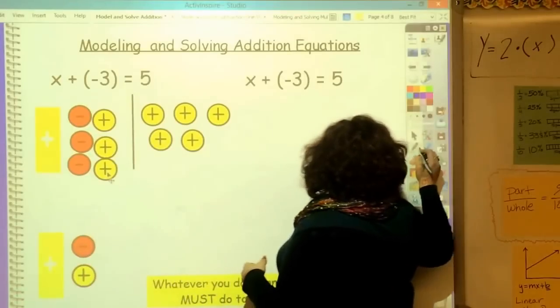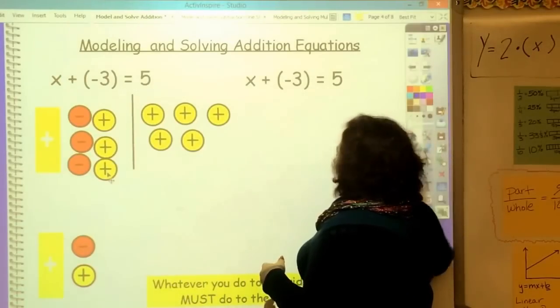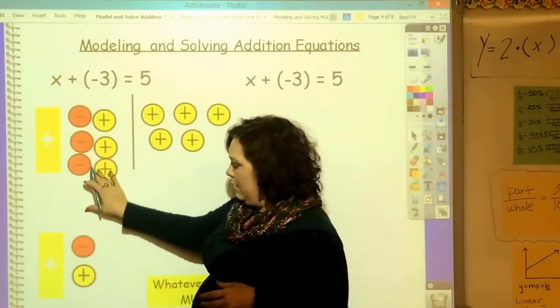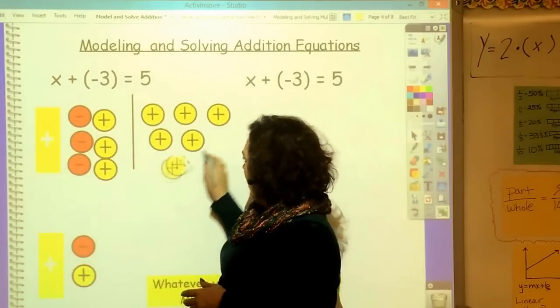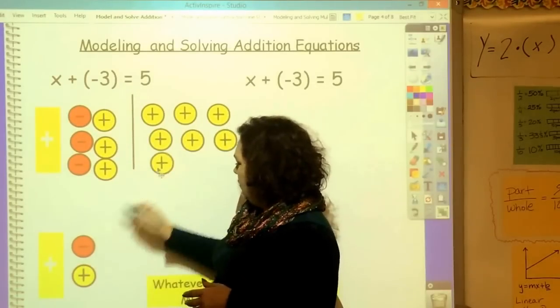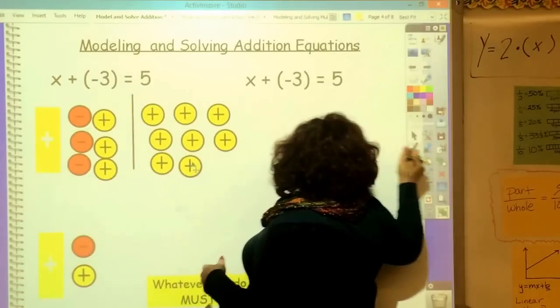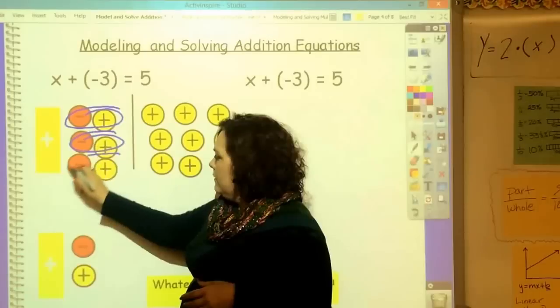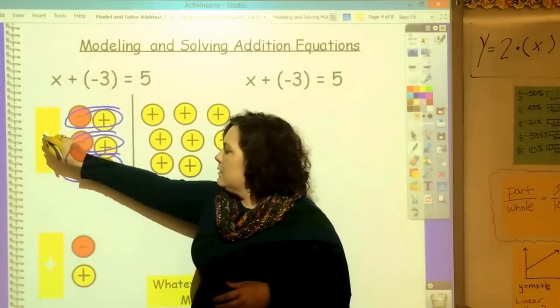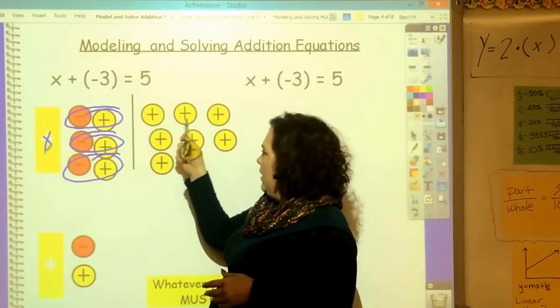What I do to this side, I have to do to this side. I added three positives here, so I'm going to add three positives here. 1, 2, 3. And now, I do any of my zero pairs, zero pair, zero pair, zero pair.